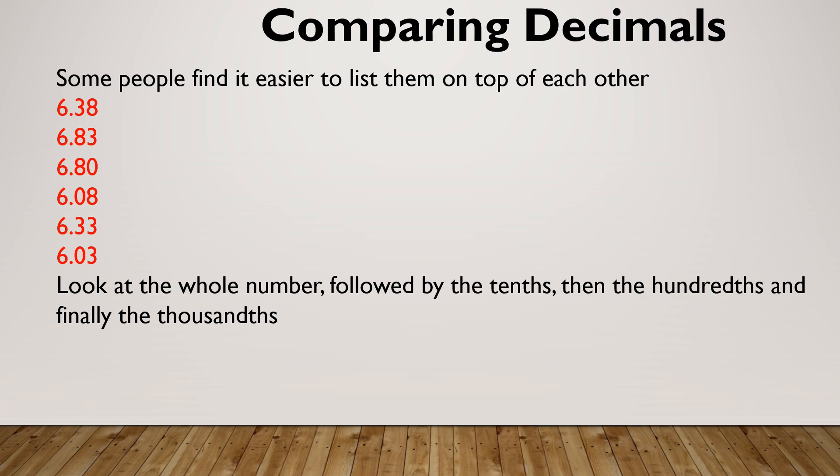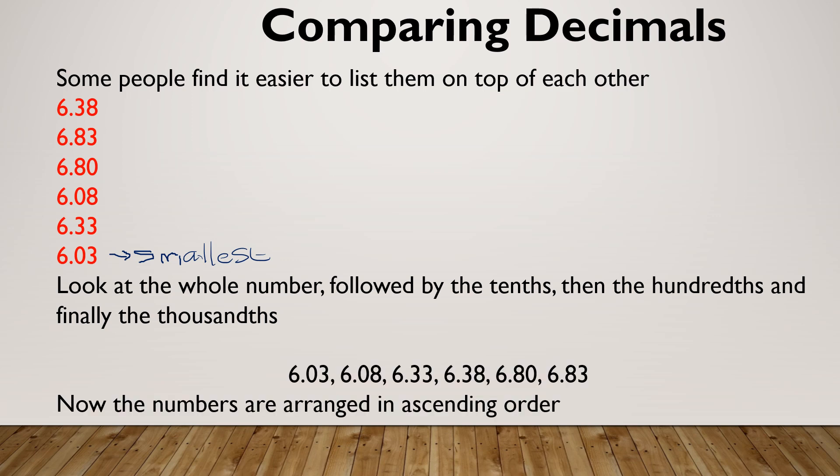If I am looking for the smallest number, I've got two that are both zero. So I'm going to use the hundredths to help me. So I've got a zero three or a zero eight. So I can see that this one is indeed the smallest.